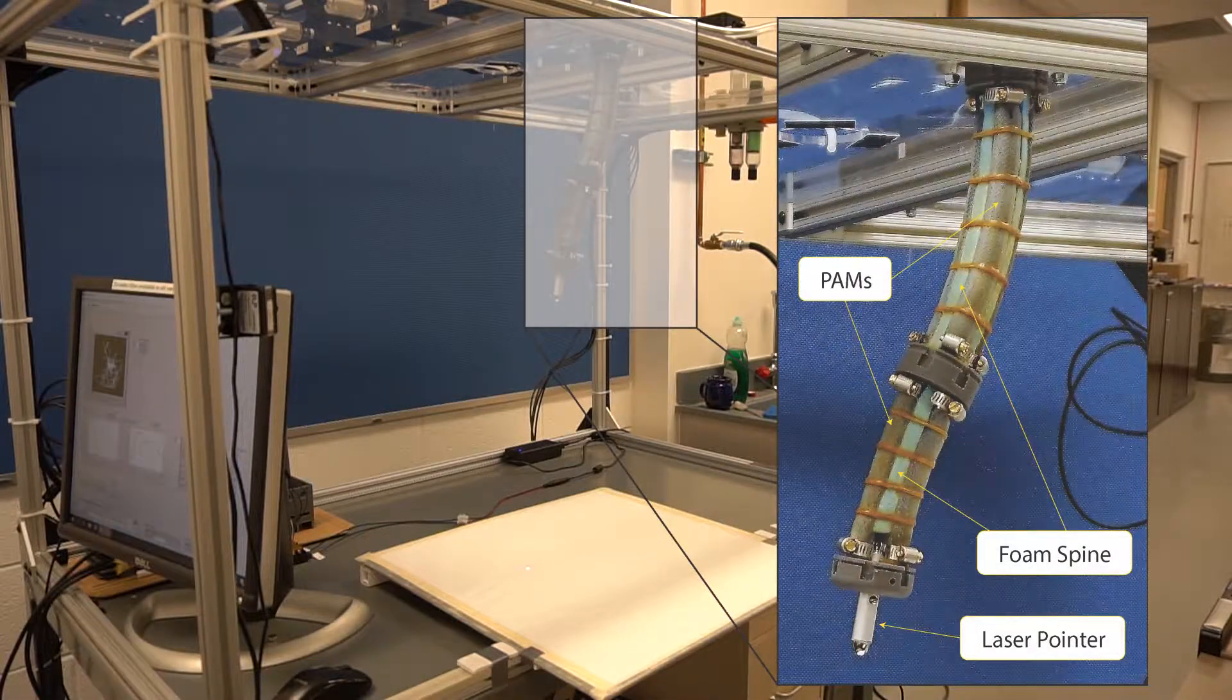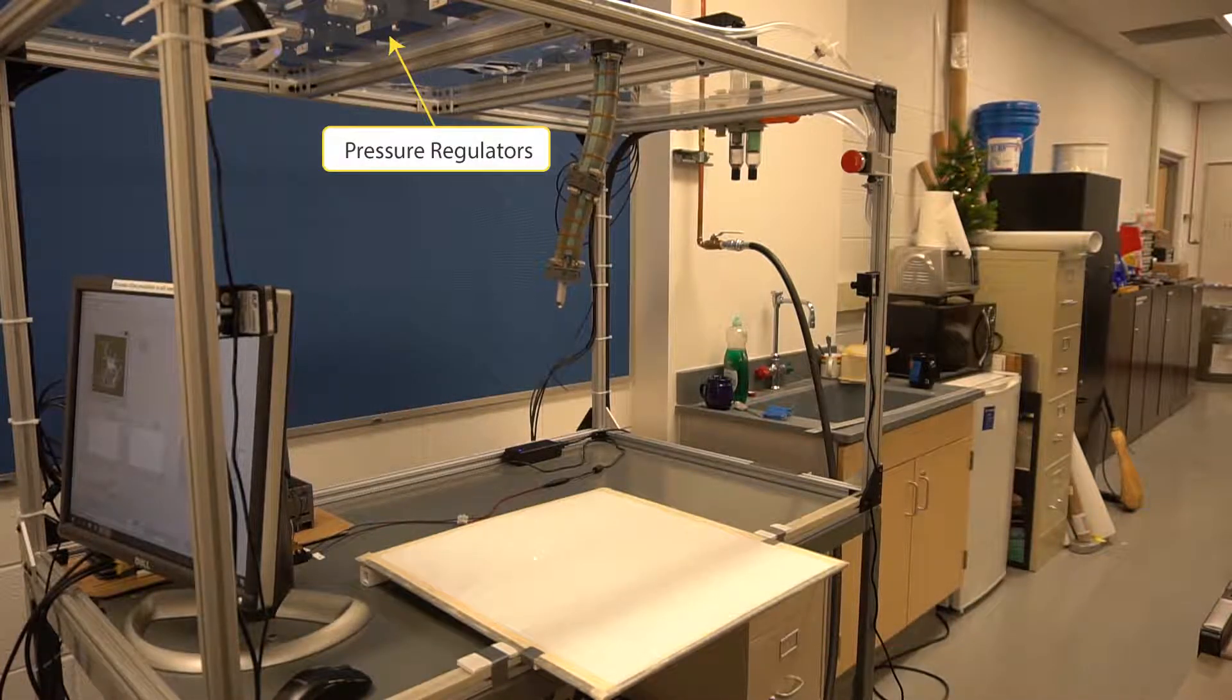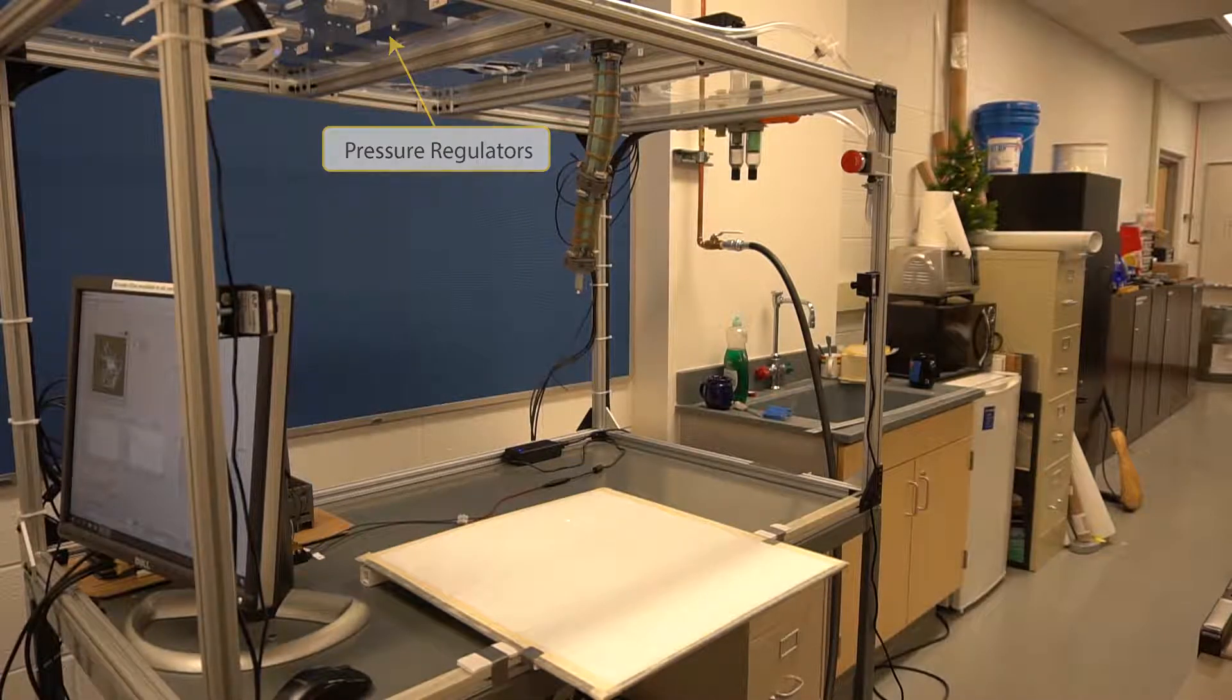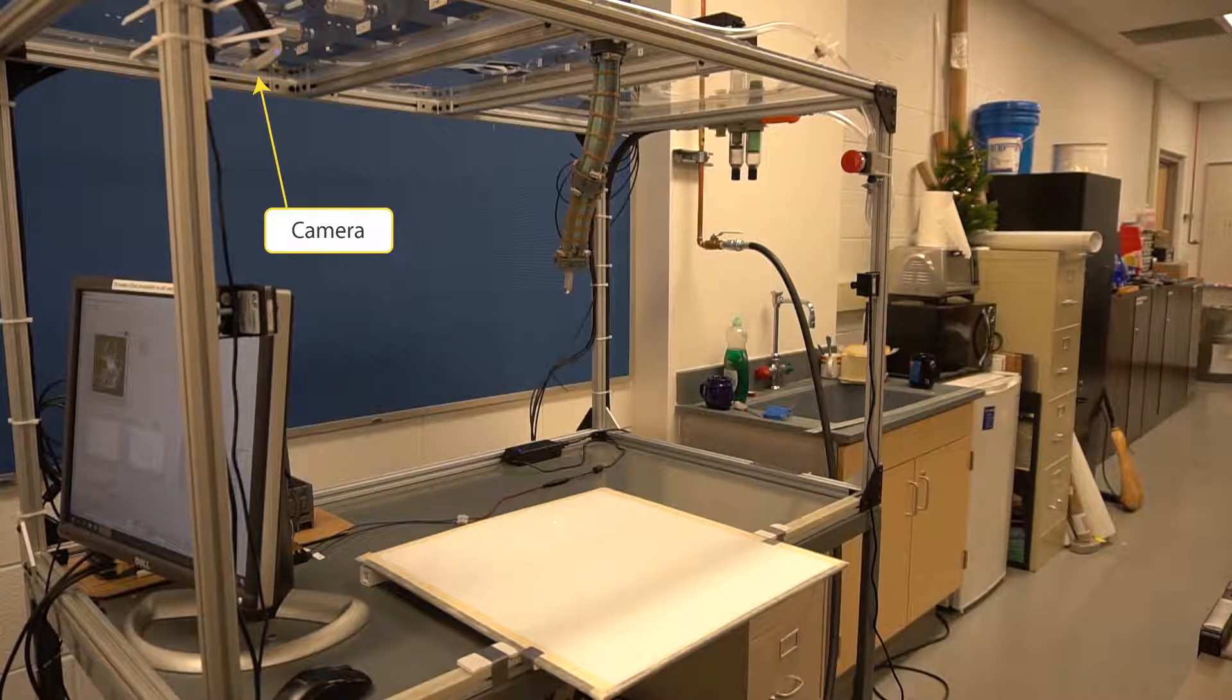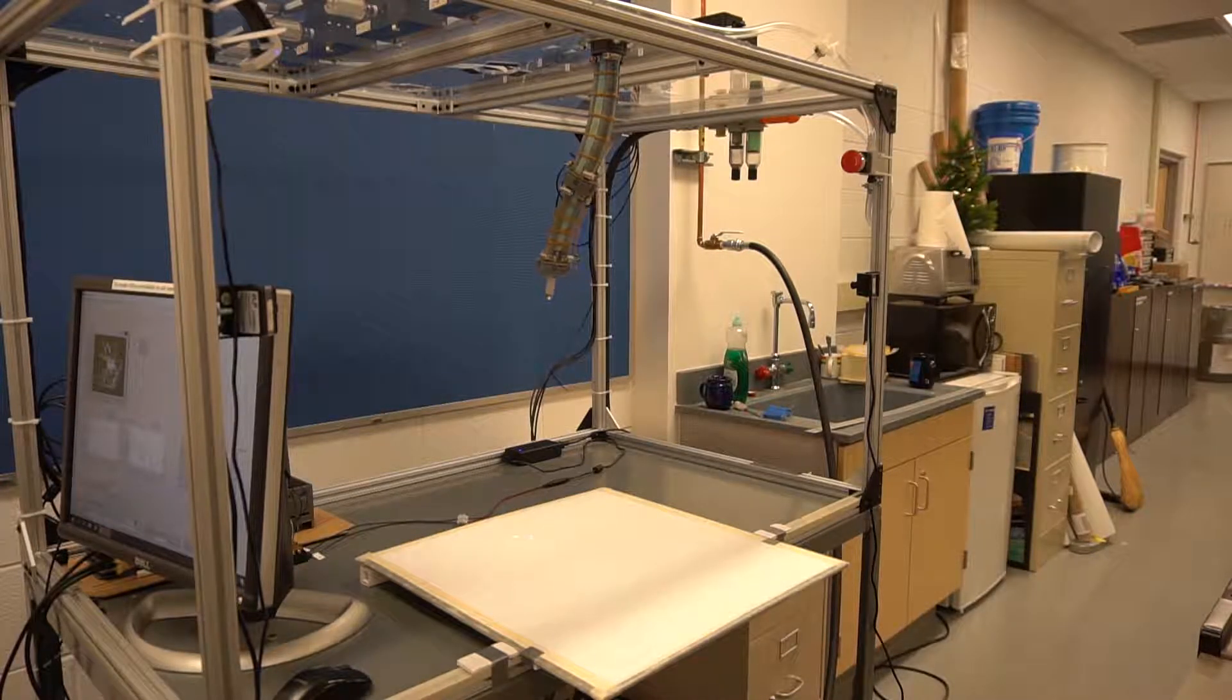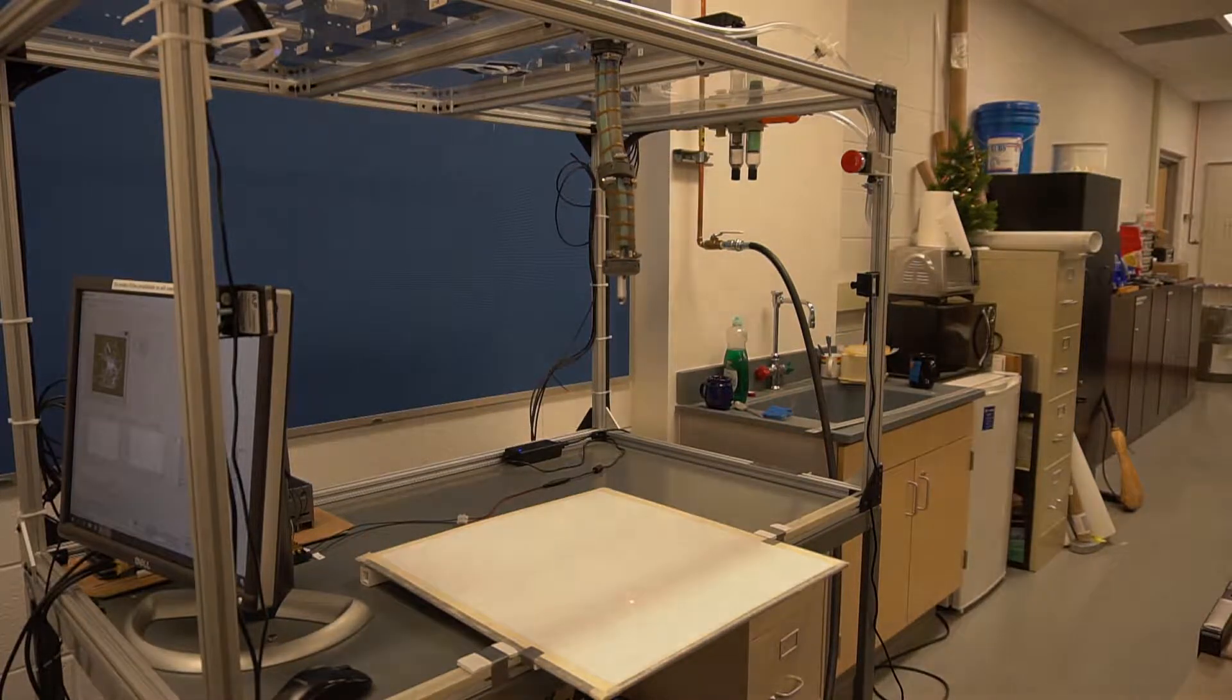The pressures inside these actuators are controlled by a set of three electronic pressure regulators and the location of the laser dot is tracked by a camera. Our goal is to construct a model that will allow us to control the position of the laser dot via control voltages sent to the regulators.